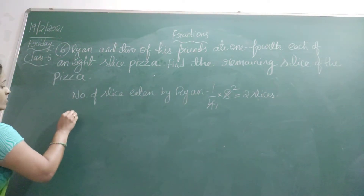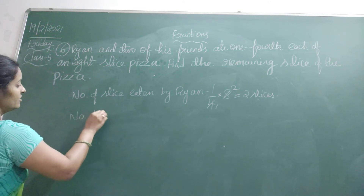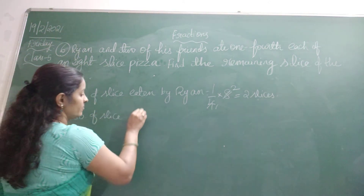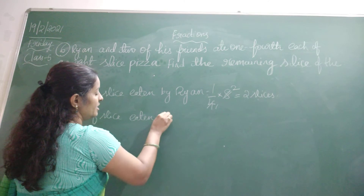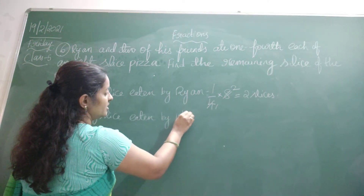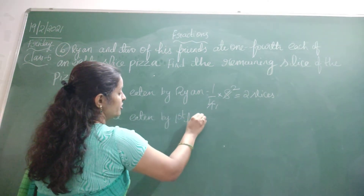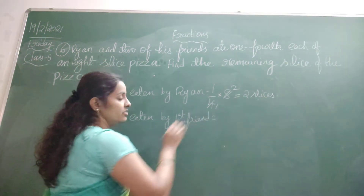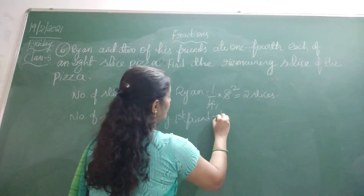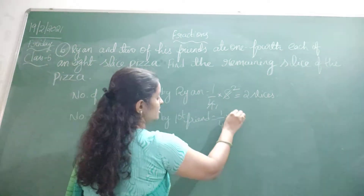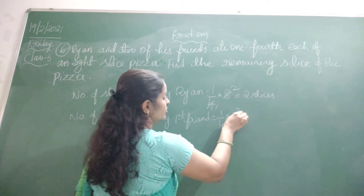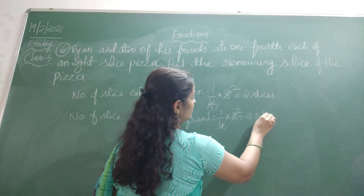Now, number of slices eaten by his first friend. Two friends are there, so let us take the first friend and second friend. For the first friend, one-fourth part of eight — four ones up, four twos up — that is two slices.